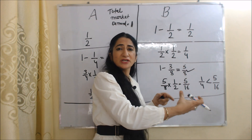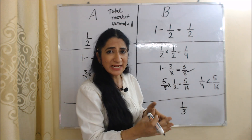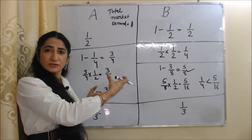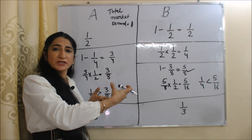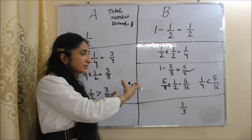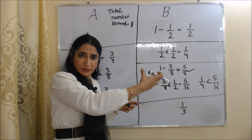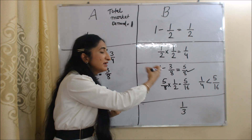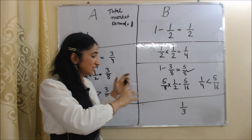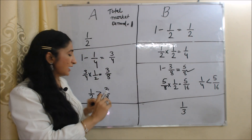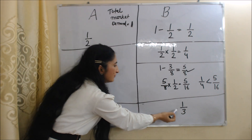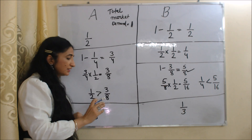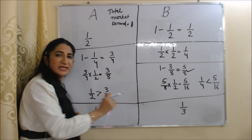As B increases production, supply increases but demand is constant, so price and profit fall. In order to increase profit, A will reduce production again. As A reduces production, profit increases, and B decides to increase production again. A will continue to reduce production but B will continue to increase production, and this process will continue until both produce 1/3 each — that is, until production of each firm becomes equal to each other.